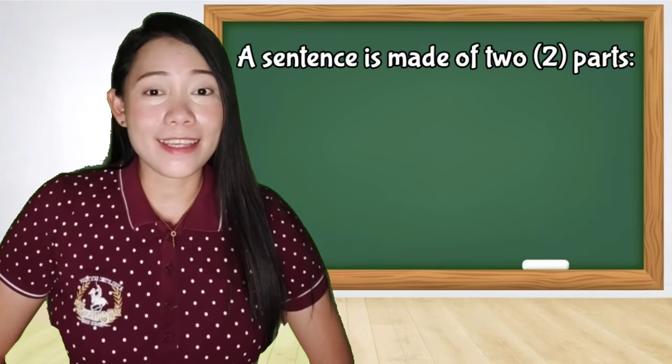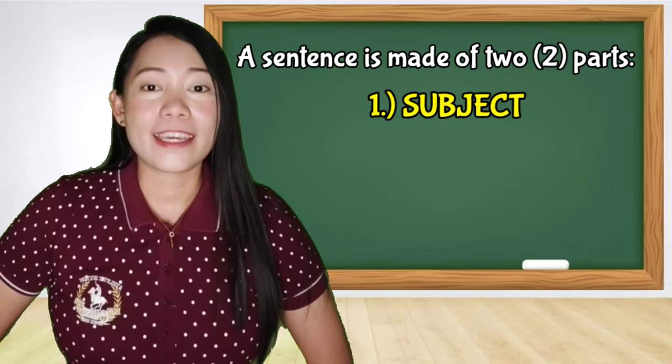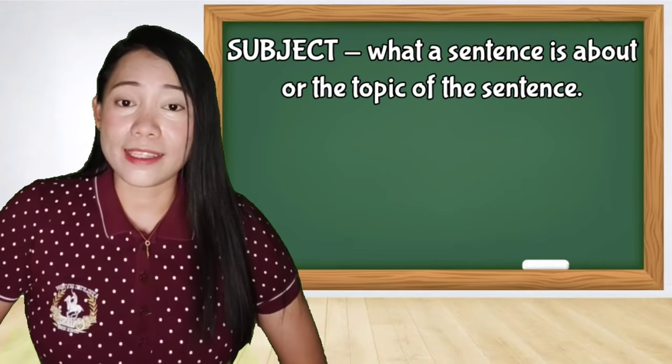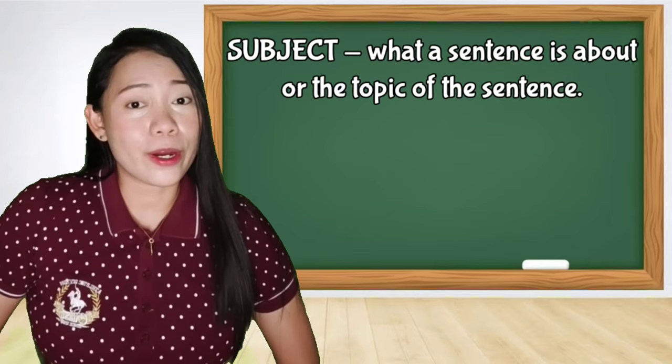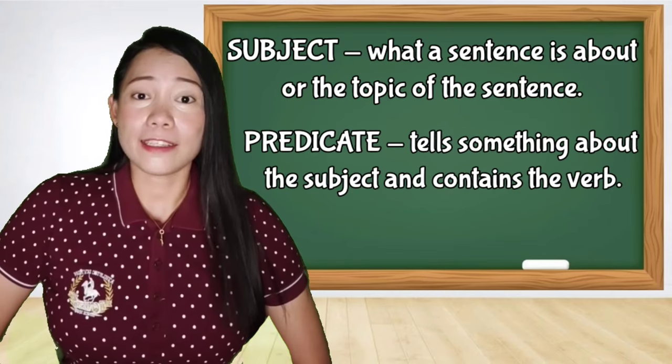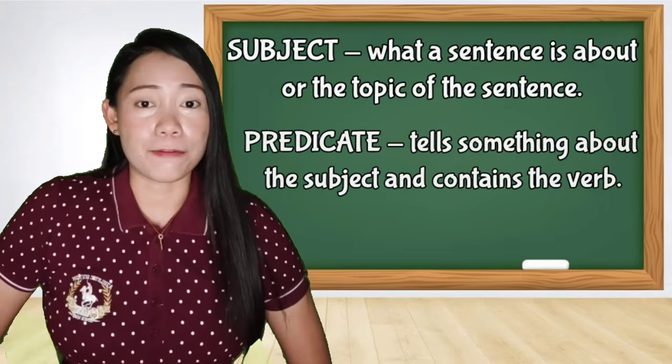A sentence is made of two parts: first is the subject and a predicate. Subject means what a sentence is about or the topic of the sentence, while the predicate tells some things about the subject. It contains a verb.